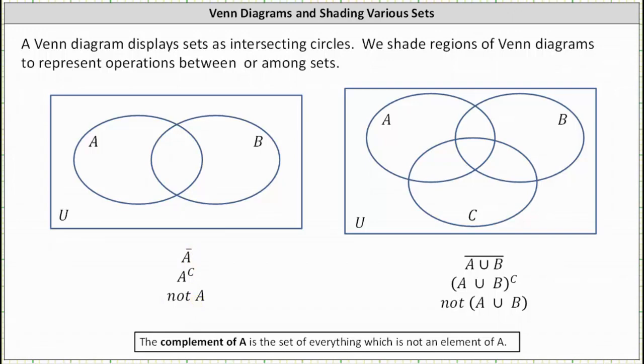So if we want to shade the region of the Venn diagram that represents a complement, notice here is set A. We want to shade the region that is not in set A, which should be the region outside set A.